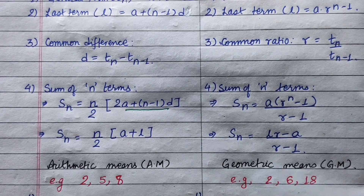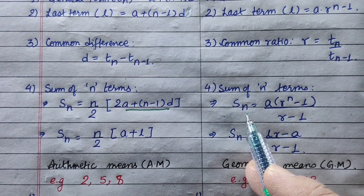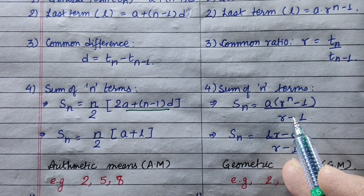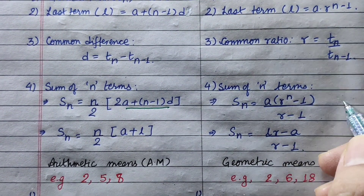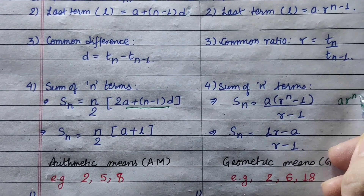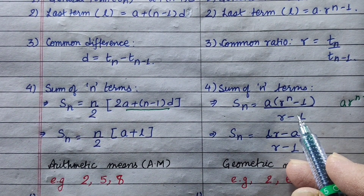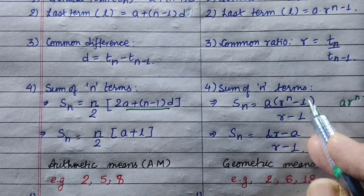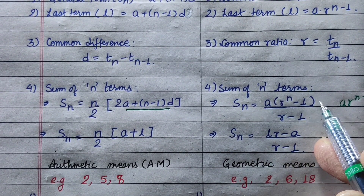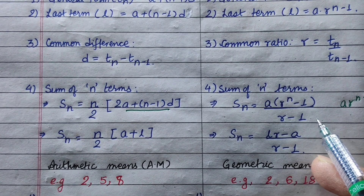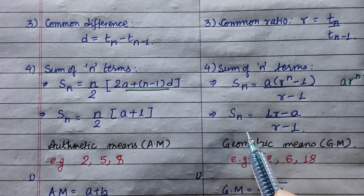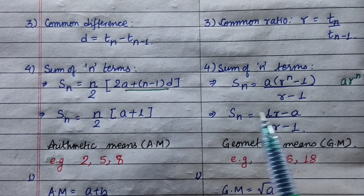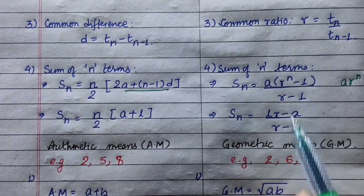For geometric progression, the sum of n terms: Sn equals a bracket r to the power n minus 1, upon r minus 1. The general term Tn is a times r to the power n minus 1. If we have the last term, the formula becomes lr minus a, divided by r minus 1. This is how we can find the sum of n terms of AP or GP.